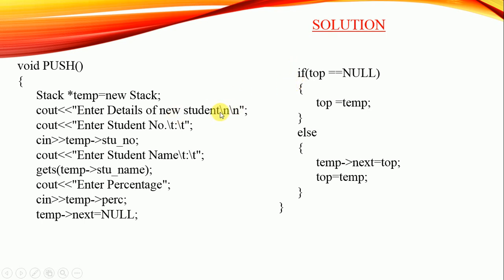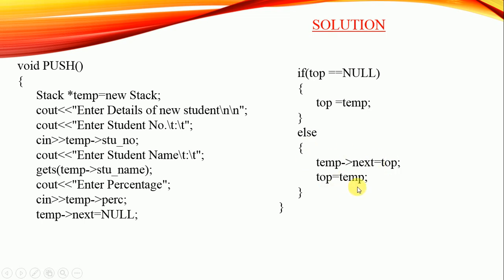Now let's understand how to attach this new node to the previous stack. If top equals null, meaning the stack is empty and the node we are inserting is the first node, then we make top point to temp. In the other case, if there are already elements in the list, we make the link part of the new node point to top — pointing to the first node — and then top starts pointing to temp, the newly created first node.